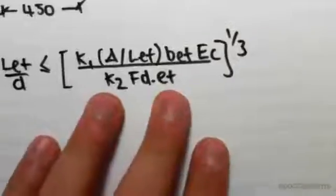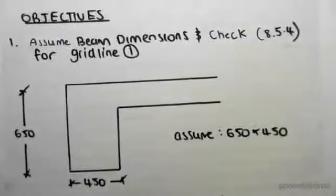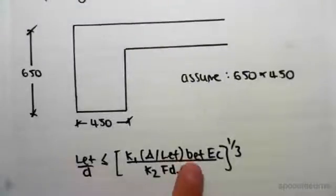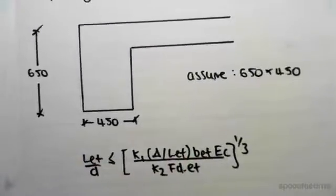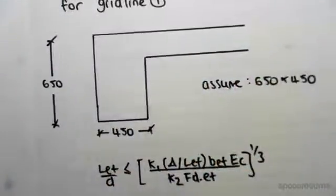We just need to check this and we're assuming this beam dimensions to start. The first thing we want to do is we can calculate the effective width.